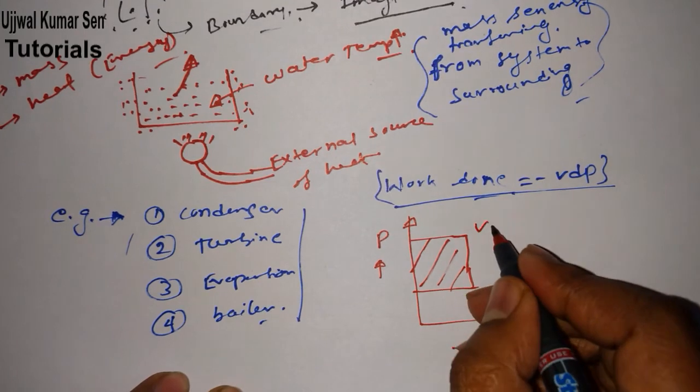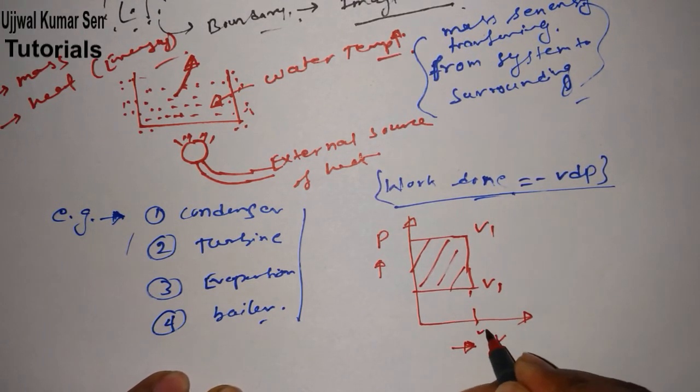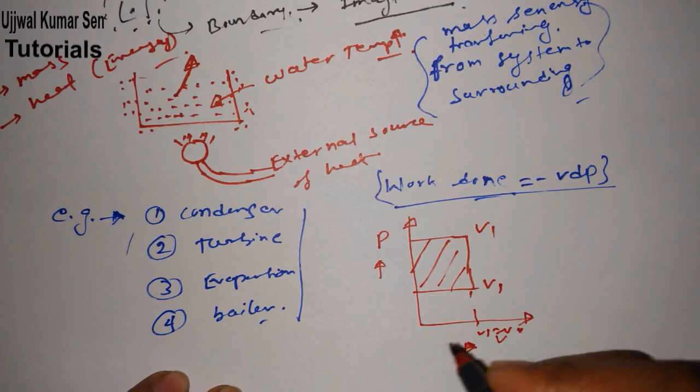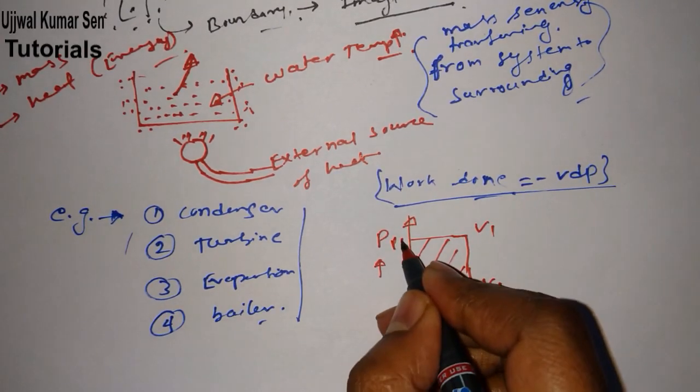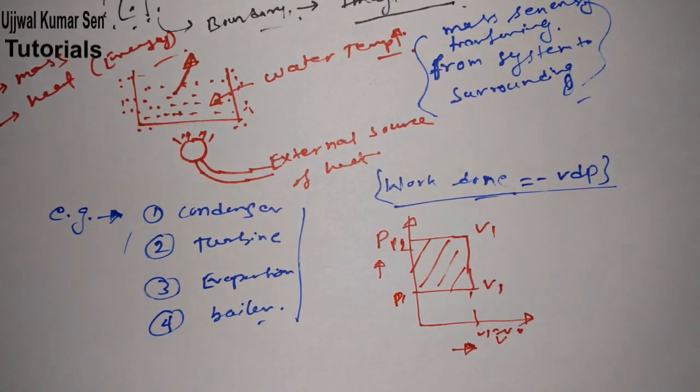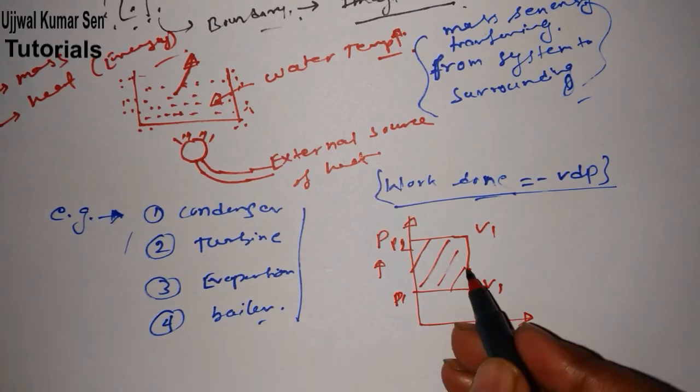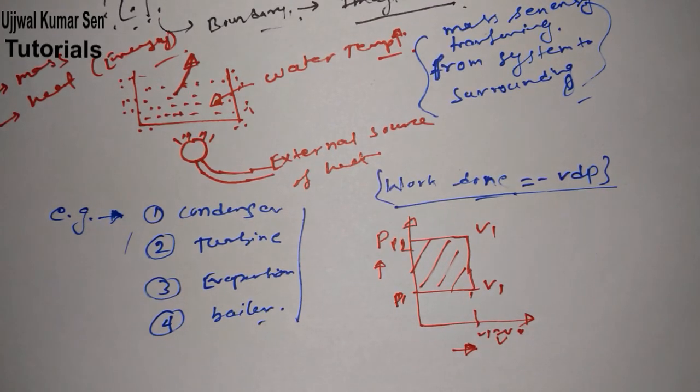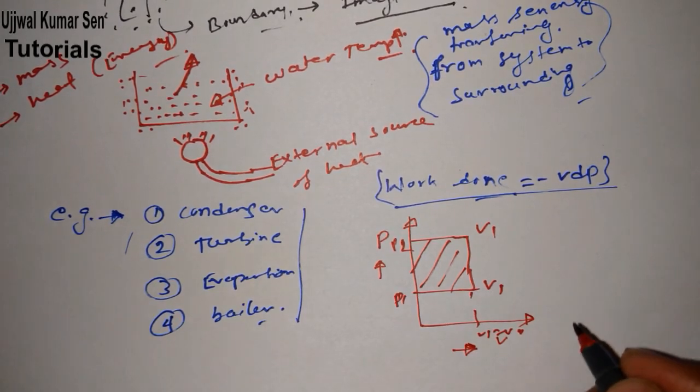In the interview they will ask you: in which axis can we draw this diagram? Then you can use this. So here v1 is equal to v2, you can say this, right? So it's p2 and p1. This is a work done diagram for open system.